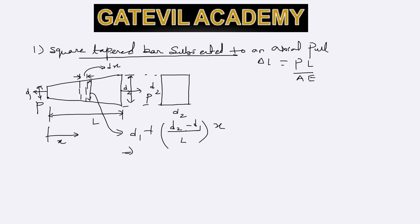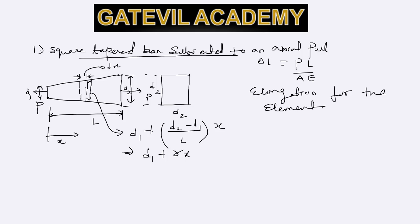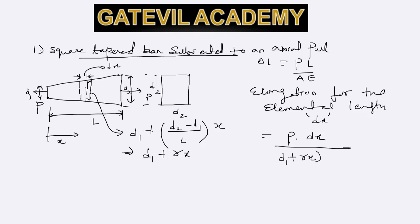Let us define gamma as (d2 minus d1) by L, so the side at position x is d1 plus gamma x. The elongation for this elemental length dx will be equal to P times dx divided by (d1 plus gamma x) squared times E, since the cross-section is square with side (d1 plus gamma x).